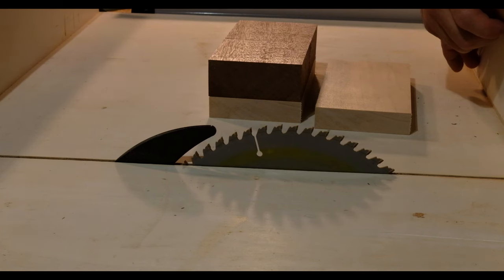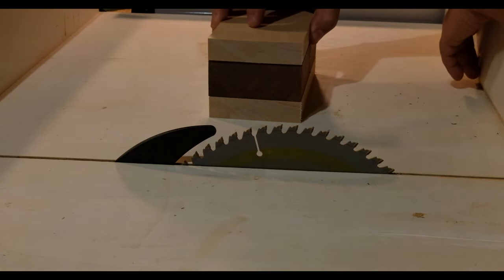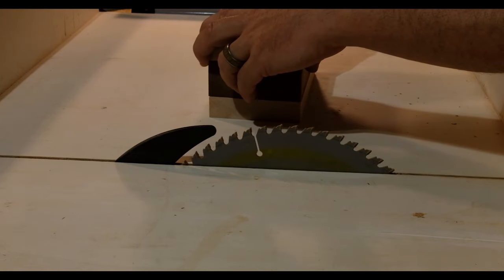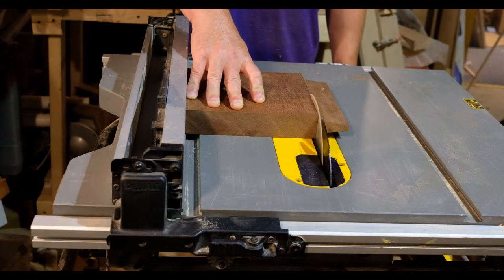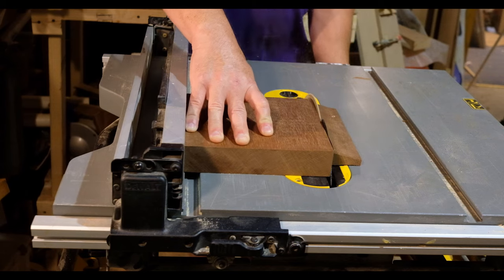I sandwiched a sepele scrap I got cheap from a local home builder between some leftover maple from my last batch of cutting boards. Trim them down to size on the table saw and cross cut sled.